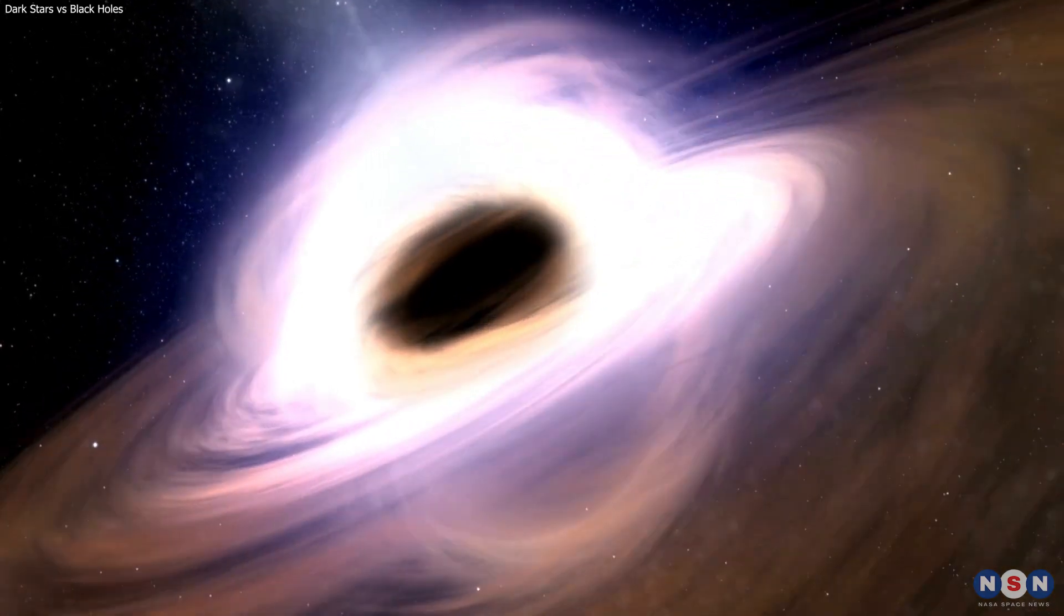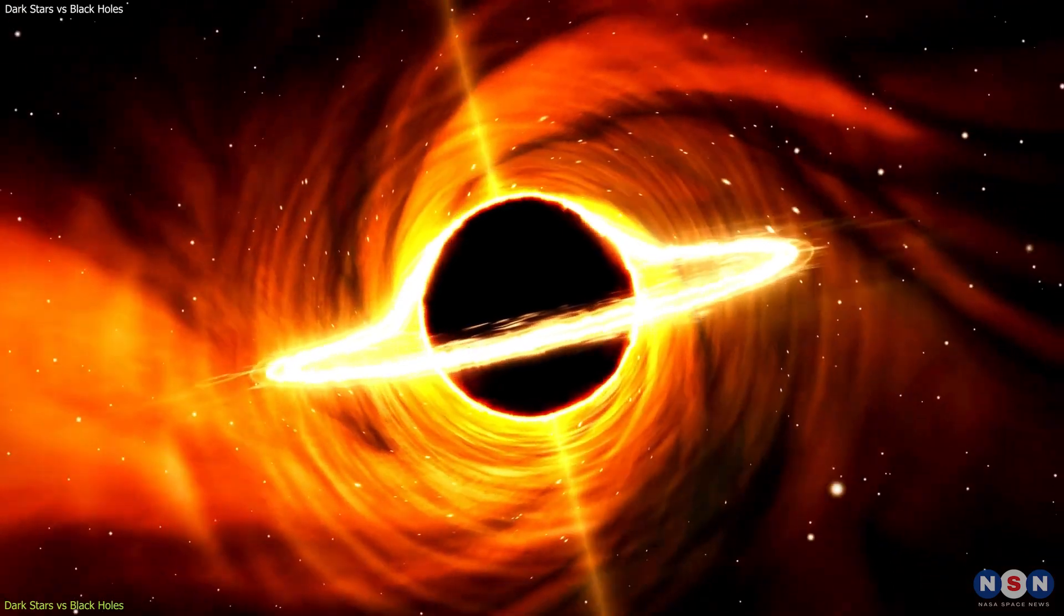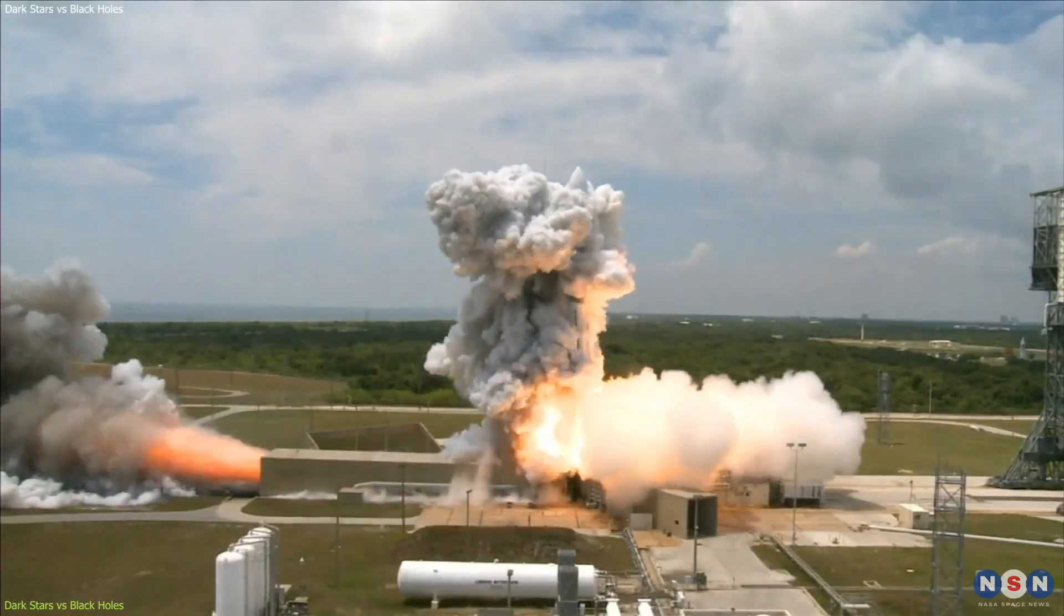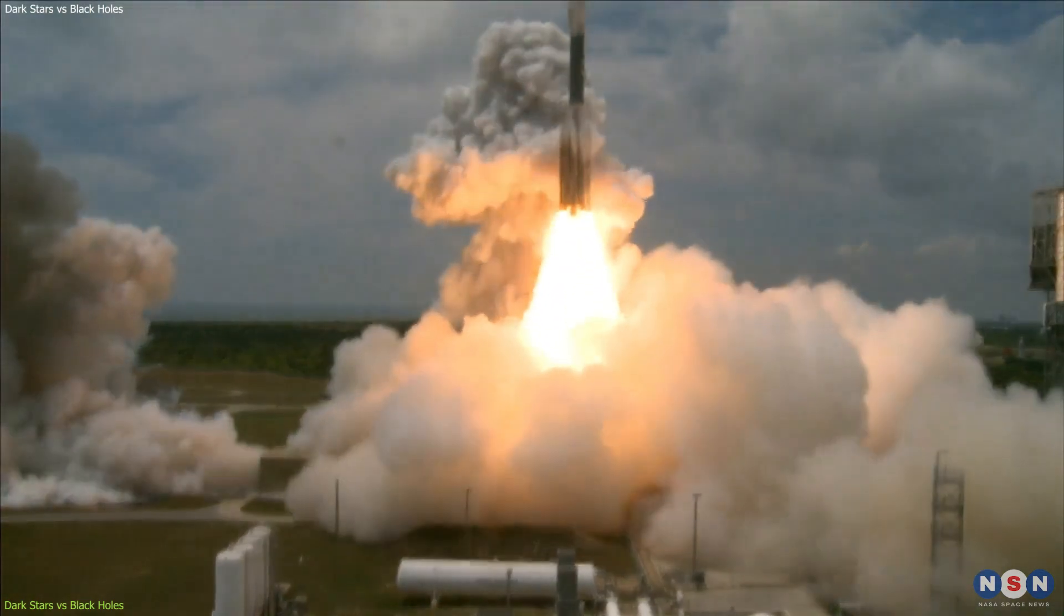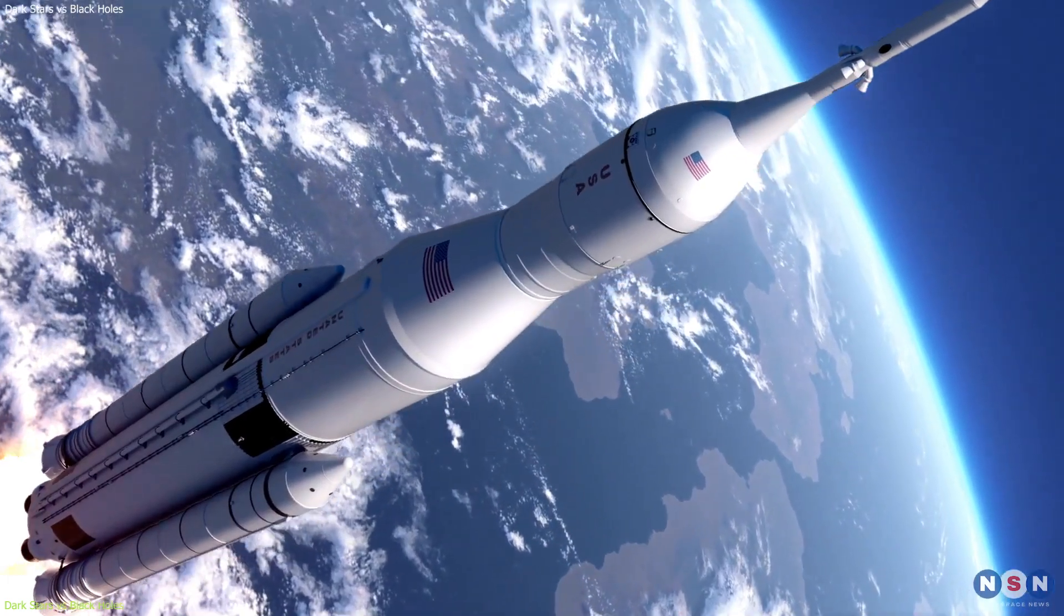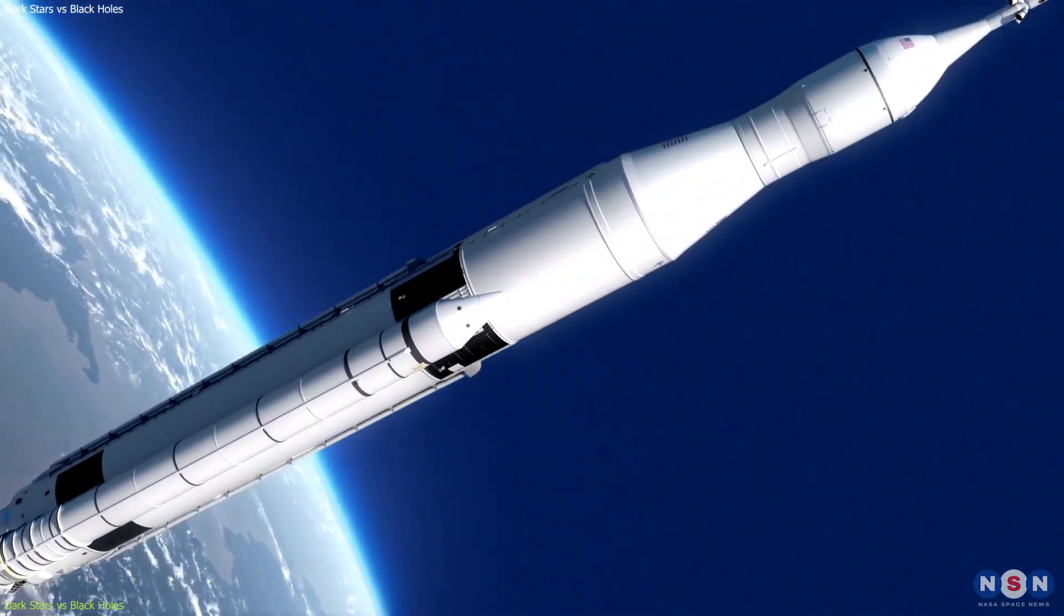Dark stars and black holes are very extreme objects that have a very high escape velocity, which is the speed needed to escape their gravitational pull. For example, if you want to launch a rocket from Earth, you need to reach a speed of about 11 km per second, or 40,000 km per hour. That's pretty fast, right?